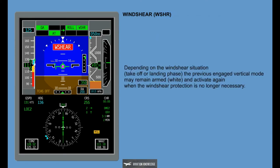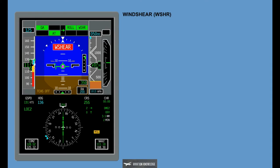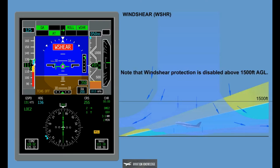The system provides flight path guidance angle, limited to stick shaker, wings level, and aural alert 'Wind shear, wind shear, wind shear.' Depending on the wind shear situation, takeoff or landing phase, the previous engaged vertical mode may remain armed, white, and activate again when the wind shear protection is no longer necessary. Note that wind shear protection is disabled above 1,500 feet above ground level.